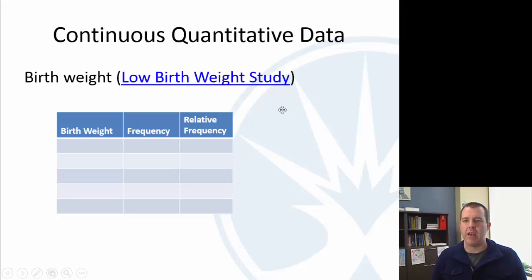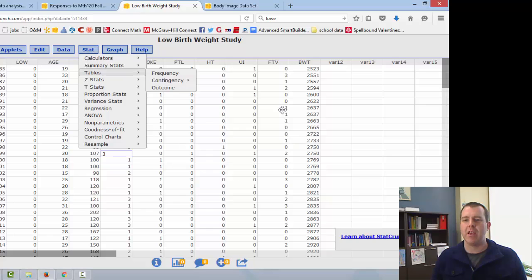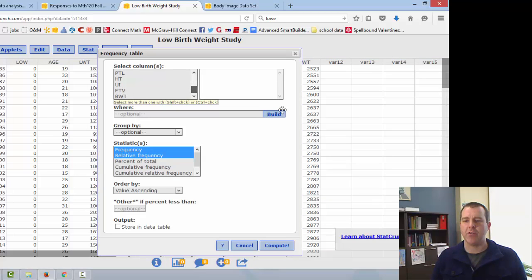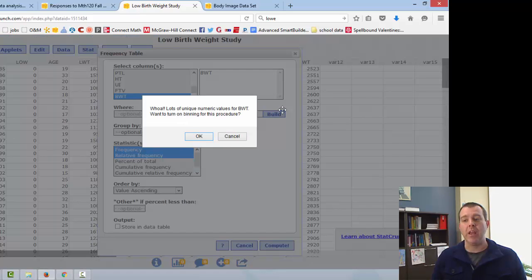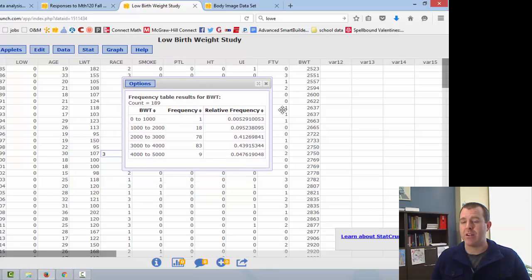So if we go back to the data, I have this low birth weight study, here's the birth weight of the child. So let's go stat tables frequency, and we want the birth weight. We're going to do frequency and relative frequency and hit compute. And you'll see it's going to pop up lots of unique values. You want to turn on binning, which is what StatCrunch calls when it creates groups. Now there's one huge problem with StatCrunch in this particular table. See if you can determine what is wrong with this table.